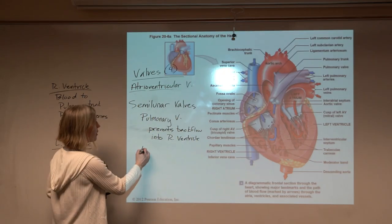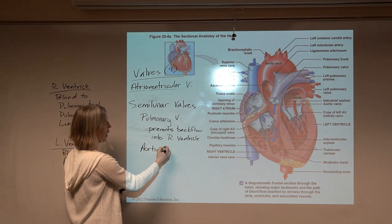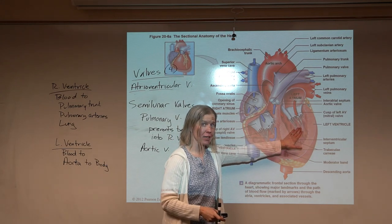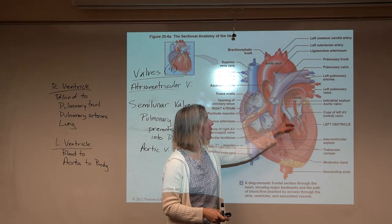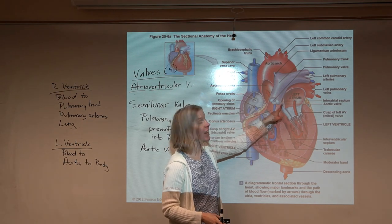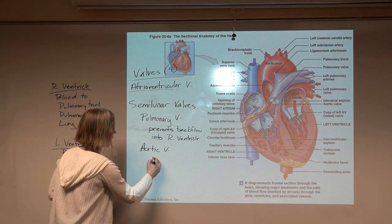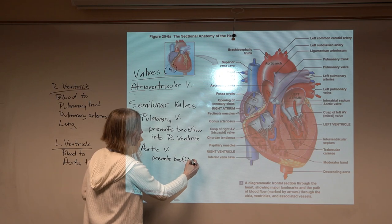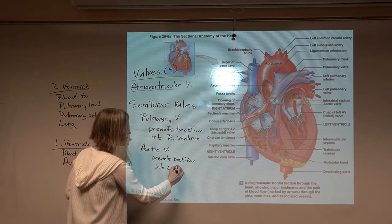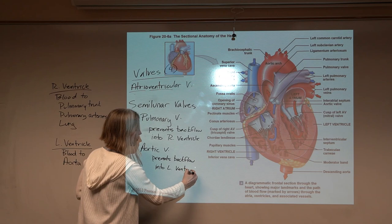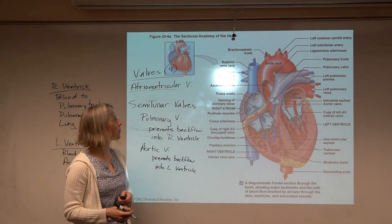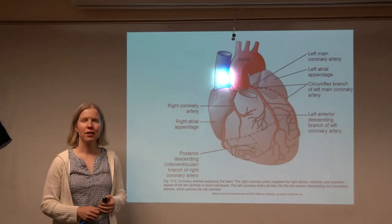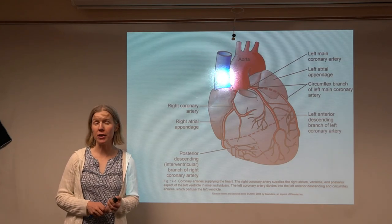You also have the aortic semilunar valve, or aortic valve, preventing backflow into the left ventricle. Blood goes up into the aorta; the valve prevents it from coming back down. So those are our four valves. Now a little more anatomy before we move on to physiology.